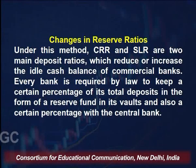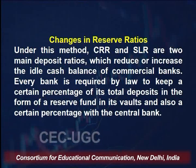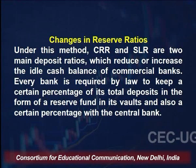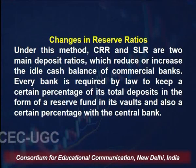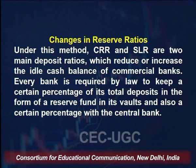The next instrument is changes in the reserve ratio. Under this method there are two ratios — CRR and SLR — which increase or reduce the idle cash balance of commercial banks. Every bank is required by law to keep a certain percentage of its total deposits in reserve funds in its vaults and also a certain percentage with the central bank. CRR (cash reserve ratio) is the percentage of total deposits that commercial banks must keep with the central bank as a reserve. SLR (statutory liquidity ratio) is the percentage of total deposits that commercial banks must maintain as liquid assets with themselves.